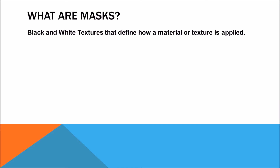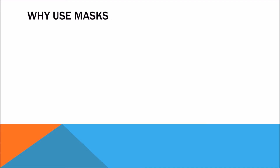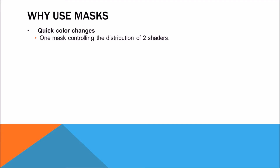First, what are masks? Masks are essentially black and white textures that define how a material or texture is applied. And why would we want to use masks? Multiple reasons. We can use them for color changes — basically you would have a black and white texture going into the factor value of a mix shader, and you can just change the diffuse color without actually having to create a new texture altogether.